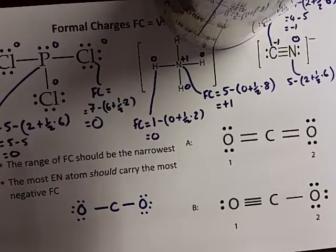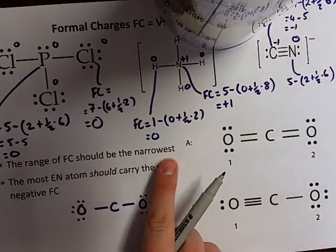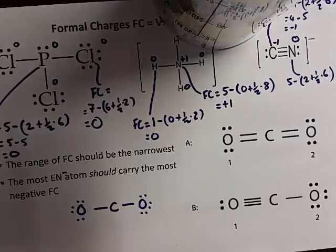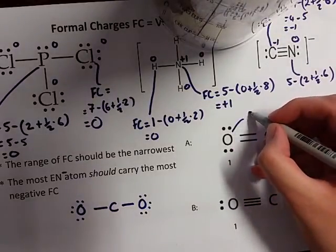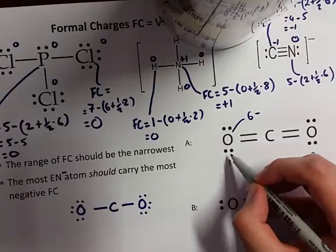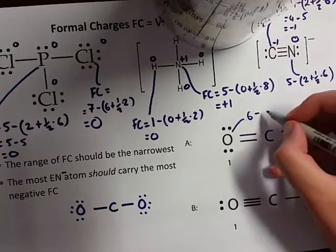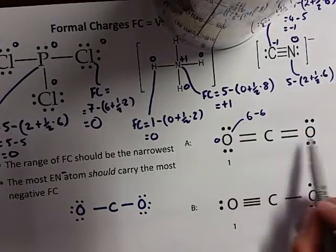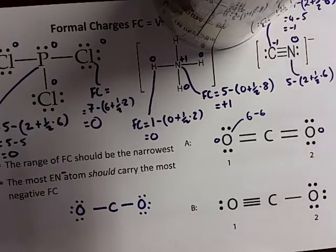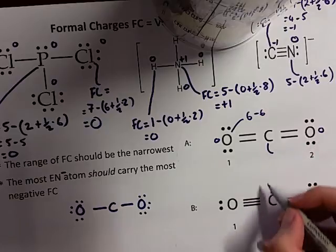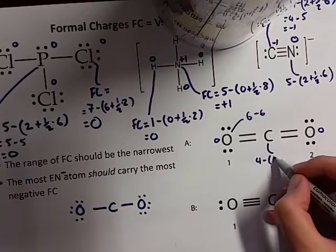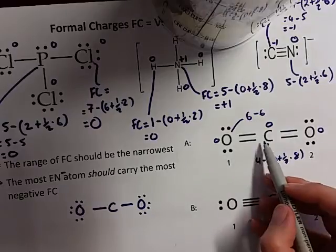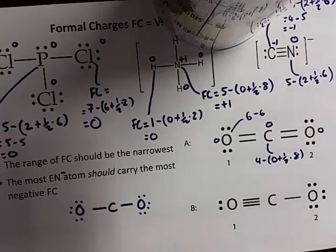Here are the two pointers: the range in the formal charge should be the narrowest, and the most electronegative atom should carry the most negative formal charge. For the first structure, this oxygen is six minus two bonding plus half the electrons — six minus six gives you zero. Oxygen one and two are in the same environment, so formal charge is zero there too. For this carbon: four minus zero lone pair electrons plus a half times eight bonding electrons, which gives us zero. Zero, zero, zero, adding up to the overall charge of a neutral molecule, which is zero.